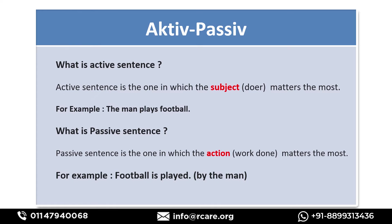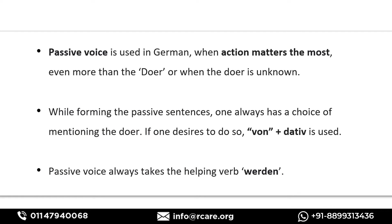Passive voice is used in German when the action matters most, even more than the doer, or when the doer is unknown. For example: 'There has been a robbery in the bank.' We do not know who robbed the bank, but the event occurred. When forming passive sentences, you have the choice of mentioning the doer using the preposition 'von' with a dative noun — 'von' is always a dative preposition.